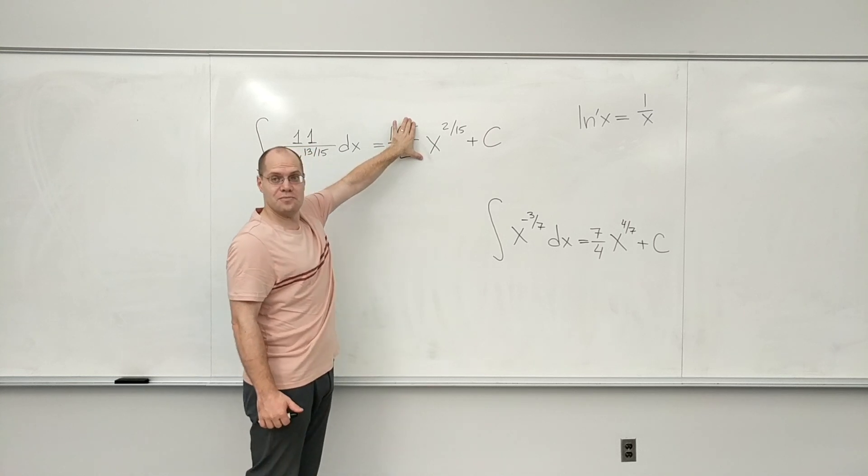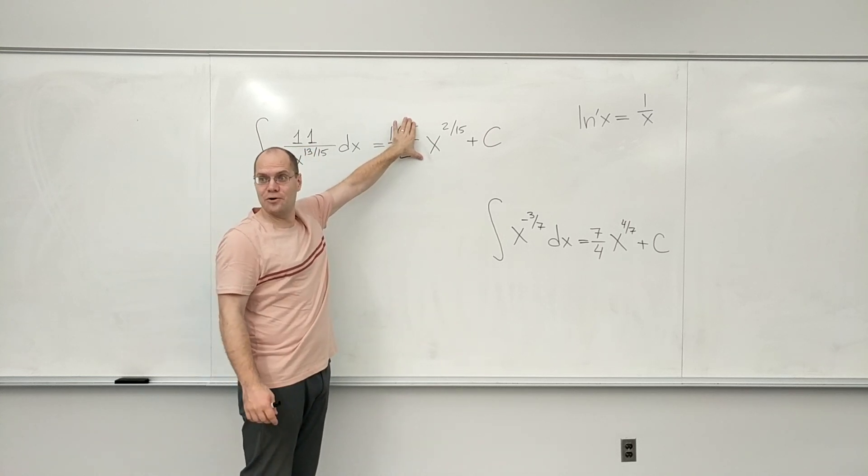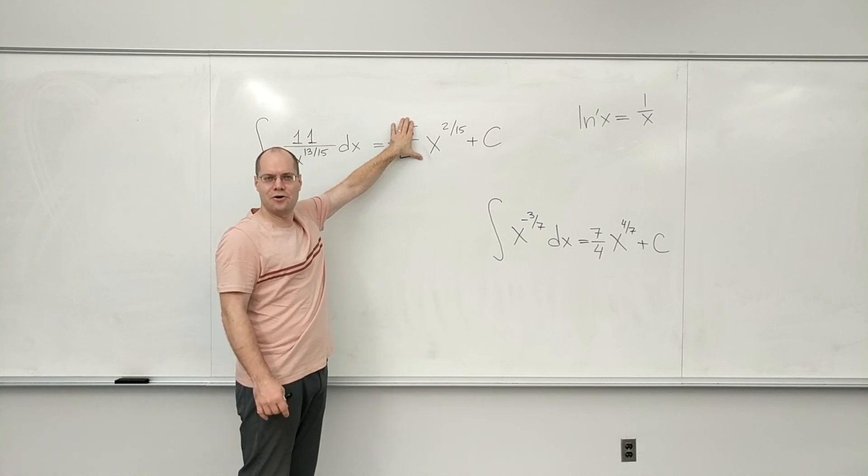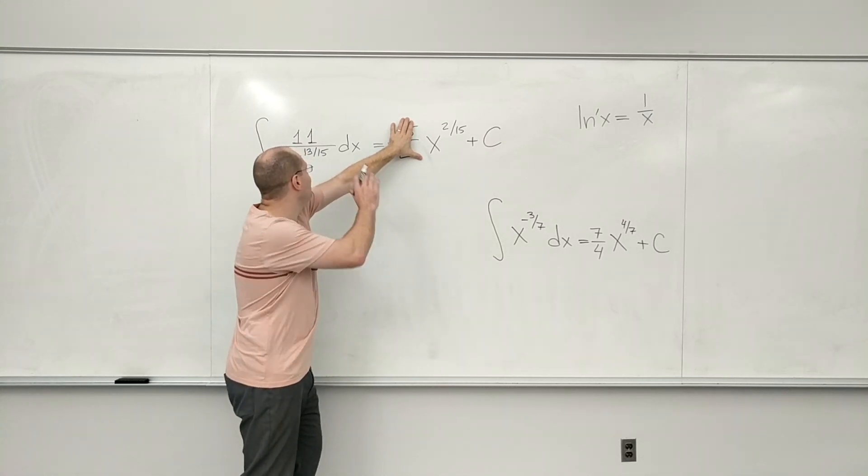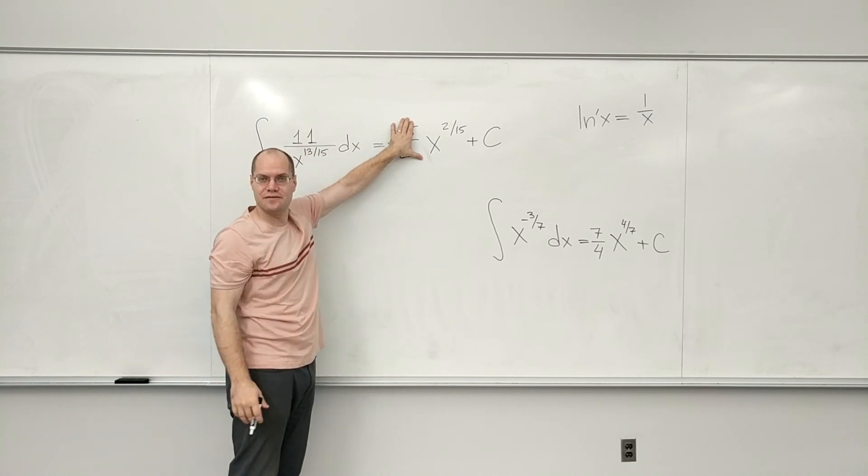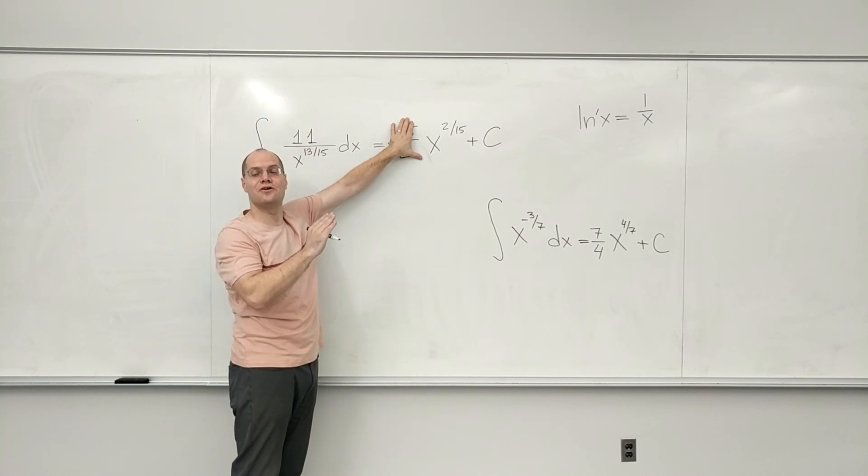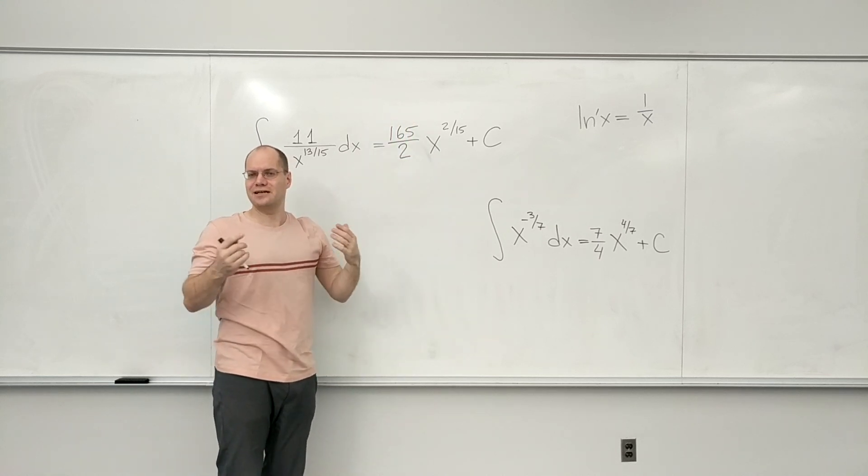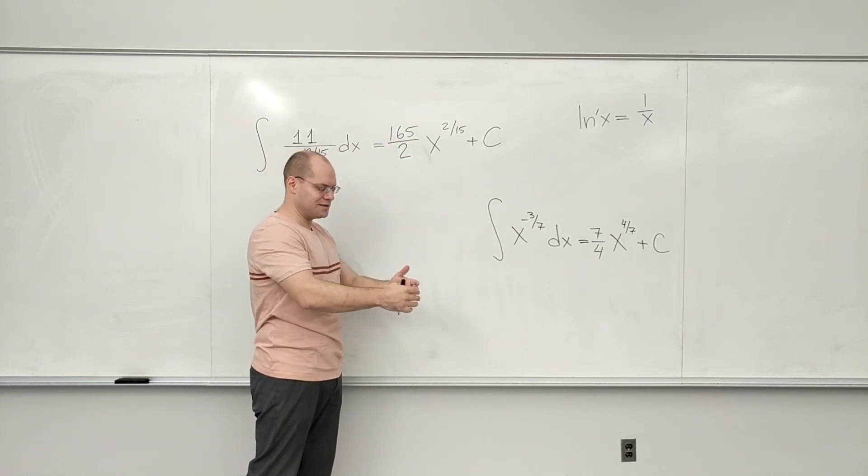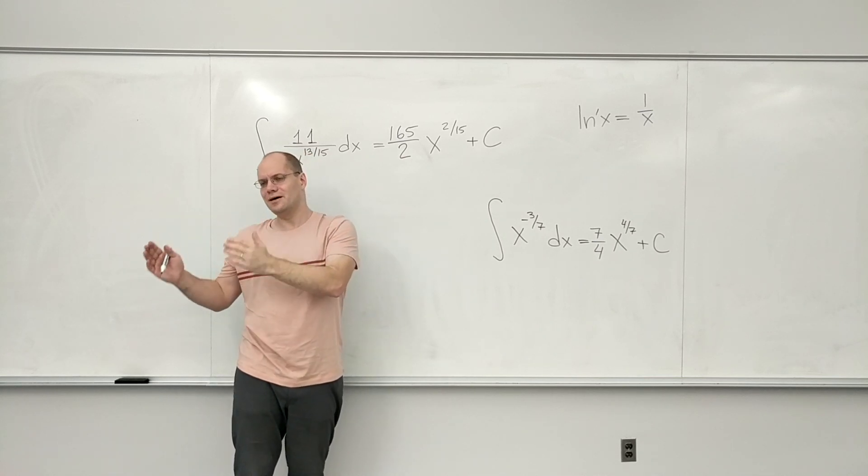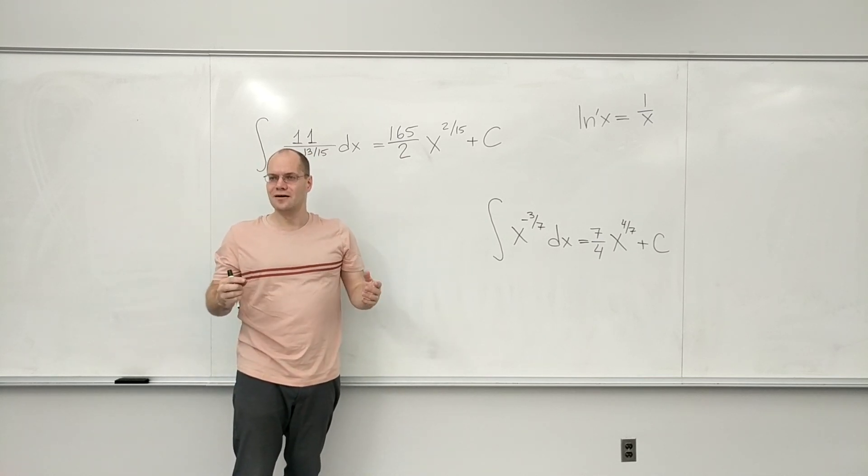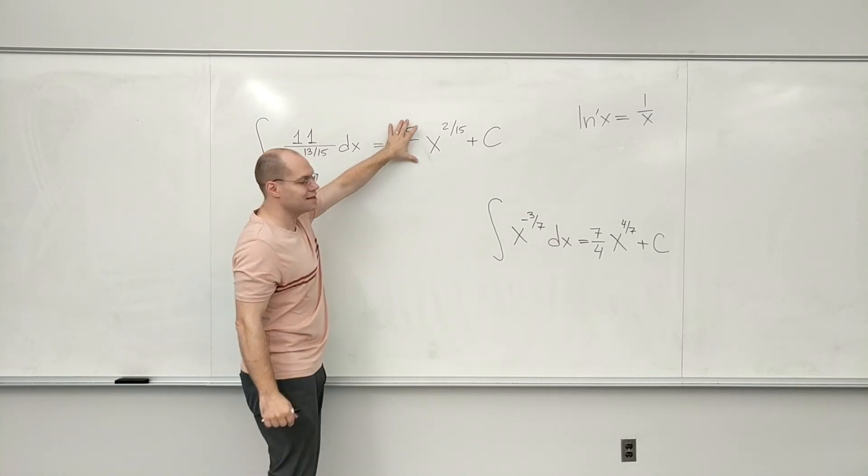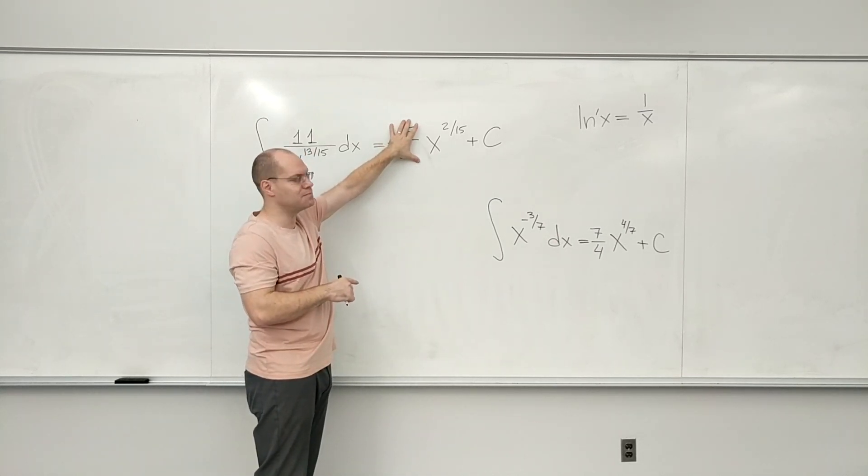So the first thing, do you guys agree with me on the power? So once you get the power right, you don't think about the power anymore. And also for the time being, I'm forgetting about the 11. So I'll take care of the 11 afterwards. It's just a multiplicative factor. I can multiply by it first, I can multiply by it in the middle, I can multiply by it at the end. It doesn't matter. I just choose to multiply by it at the end because I want to focus on other things.